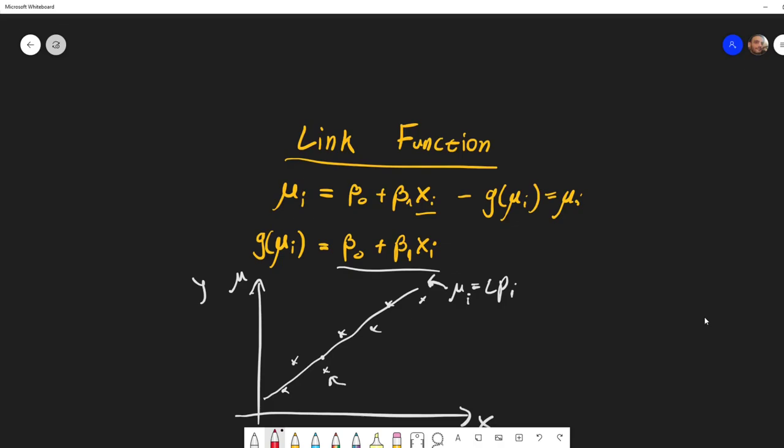But if our structure wouldn't be linear, if we would see something like this, then a straight line might not do it anymore. This might be wrong. And maybe what we're looking for is some transformation like this. In order to transform this structure to a linear structure, maybe we need to do some transformation on the mu's.